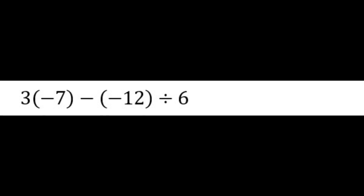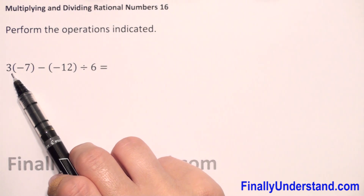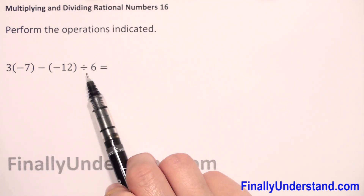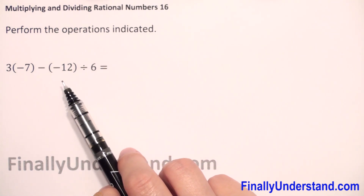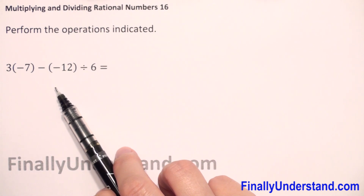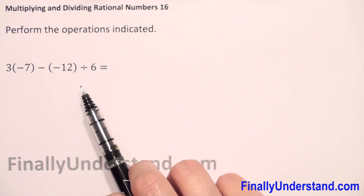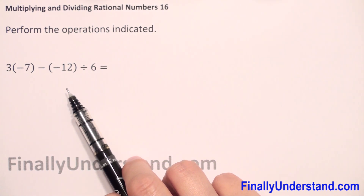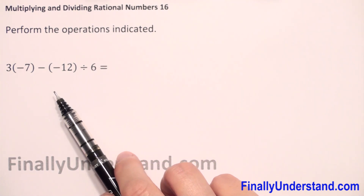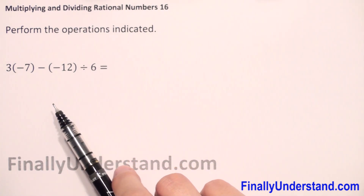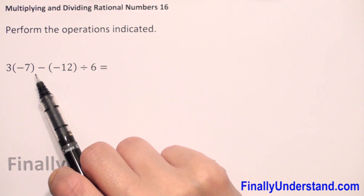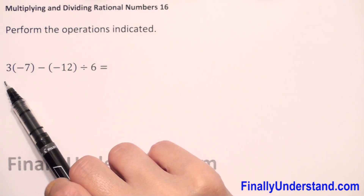Perform the operations indicated. We have here multiplication — when we don't have any sign it's always multiplication — subtraction, and division. The order of operations for integers is the same as for positive numbers: first parentheses, then powers, multiplication, division, addition, subtraction. We have multiplication, division, and subtraction, so we will start from the left side and do multiplication first.